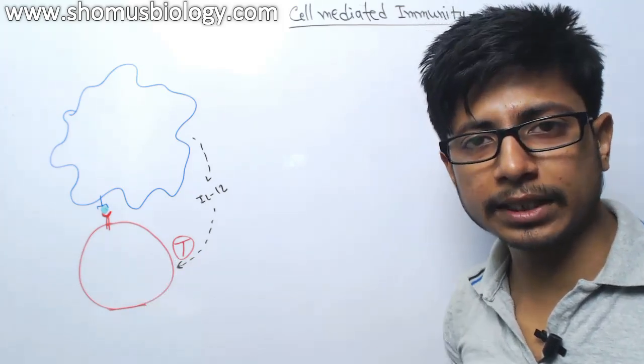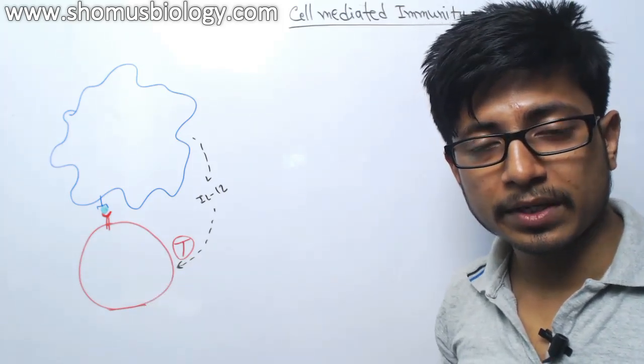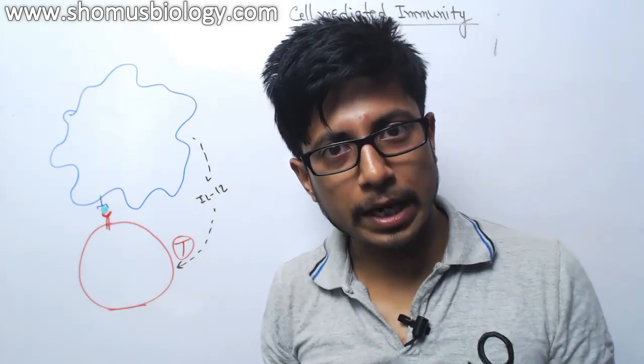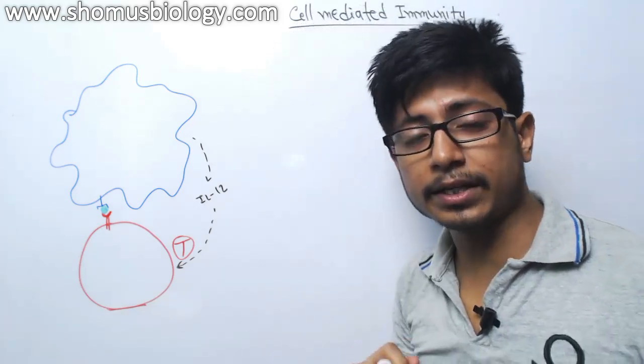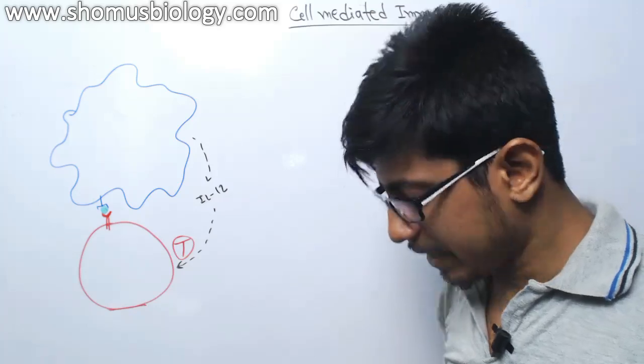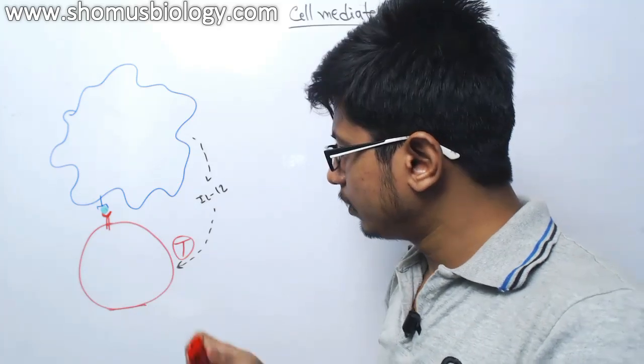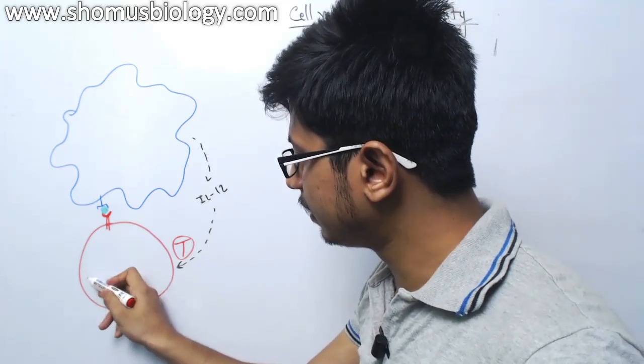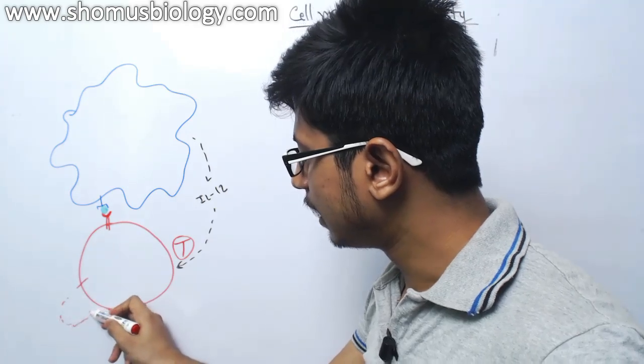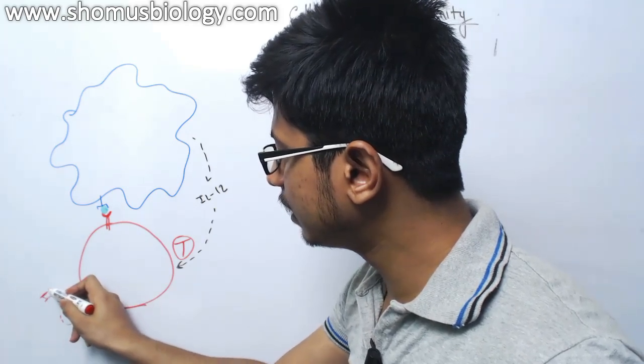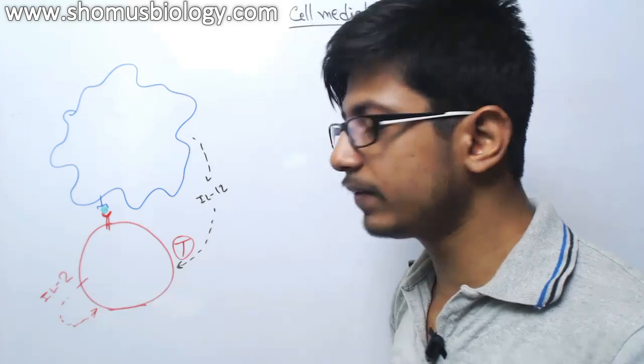T-helper cell on the other hand starts secreting many different types of cytokines. One of such cytokines is interleukin-2. Now, interleukin-2 is secreted by T-cell and it is acting on T-cell itself.